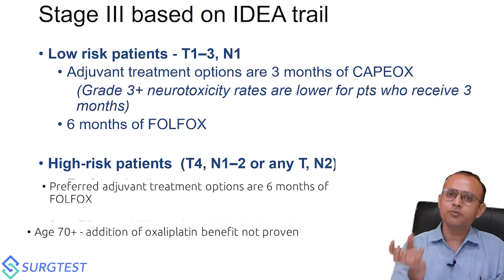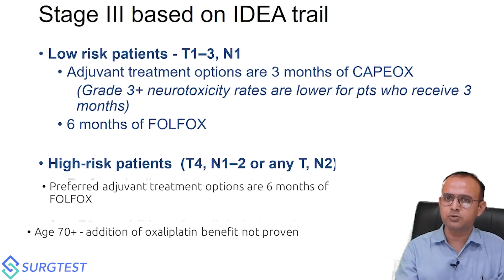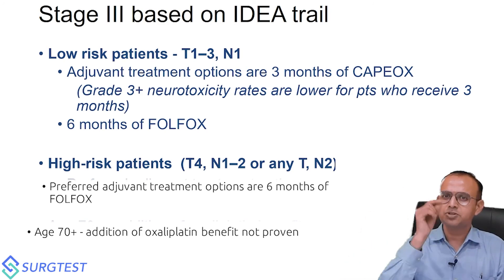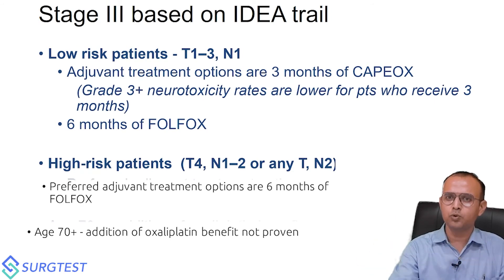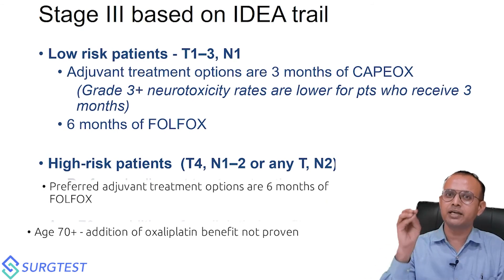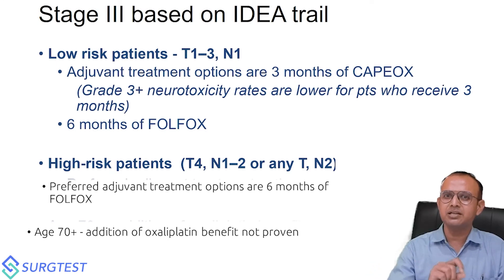All these trials aim to give the patient maximum benefit with fewer side effects. To summarize: stage one — no chemotherapy. Stage two high risk — chemotherapy based on those seven factors. Stage two low risk with MSI high — no chemotherapy. Stage two MSI low — chemotherapy, but no oxaliplatin. Stage three — CAPOX or FOLFOX, with low-risk stage three receiving three months of CAPOX rather than six months of FOLFOX.